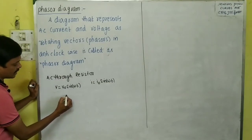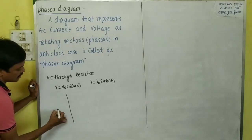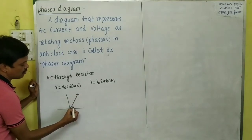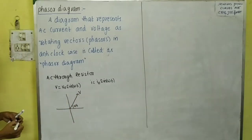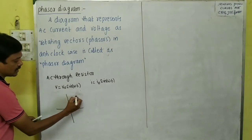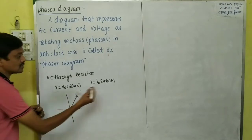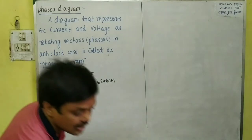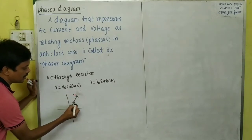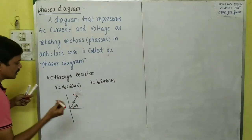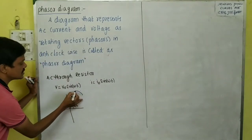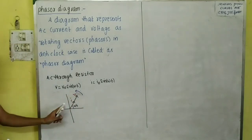When we draw the phasor diagram, the voltage is indicated as a vector making angle ωt. The current is also indicated in the same direction at the same angle, because the current angle and voltage angle are identical. Both voltage and current phasors rotate by the same angle in the anti-clockwise direction. This is the phasor diagram for the resistor.